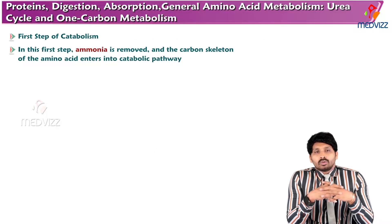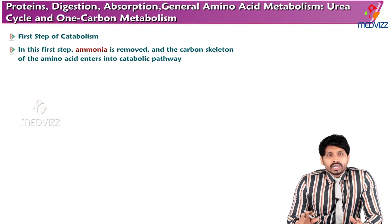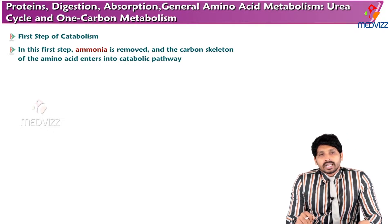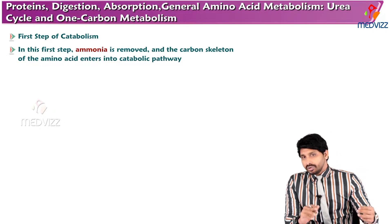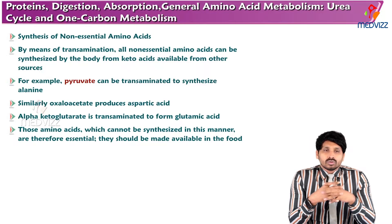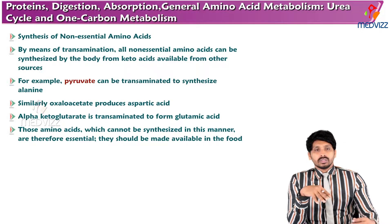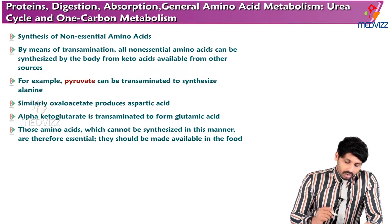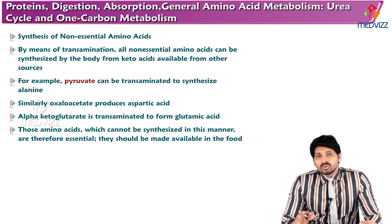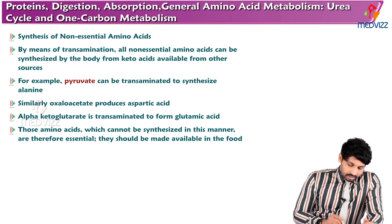In the first step of catabolism of amino acids, ammonia is removed and the carbon skeleton of amino acids enters into catabolic pathways such as gluconeogenesis. This carbon skeleton may also be useful in synthesis of non-essential amino acids, apart from gluconeogenesis, by means of transamination. All non-essential amino acids which have to be synthesized by the body come from keto acids available from other sources.